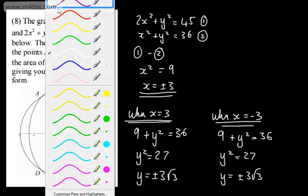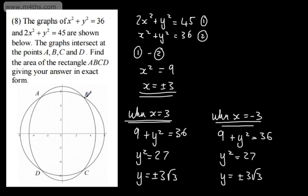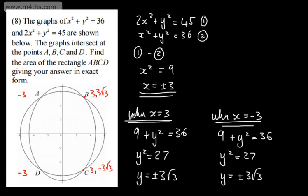Let's label the coordinates. The x-coordinate on the right is 3, and on the left is negative 3. The y-coordinate at the top is positive 3 root 3, and at the bottom is negative 3 root 3. So for x equals 3, we have y equals positive 3 root 3 and negative 3 root 3; and for x equals negative 3, we have positive 3 root 3 and negative 3 root 3.